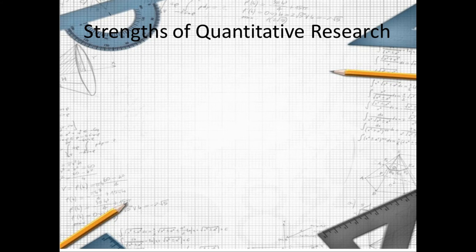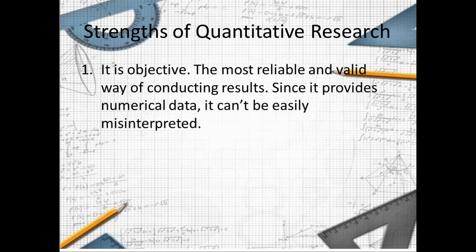Strengths of quantitative research: Number one, it is objective — the most reliable and valid way of conducting research since it provides numerical data that cannot be easily misinterpreted. In quantitative research, because the result is numerical, most of our decisions and interpretations are correct, based on computation using statistical tools.